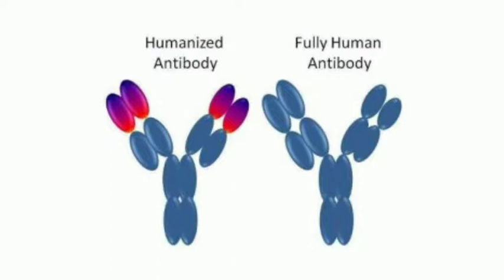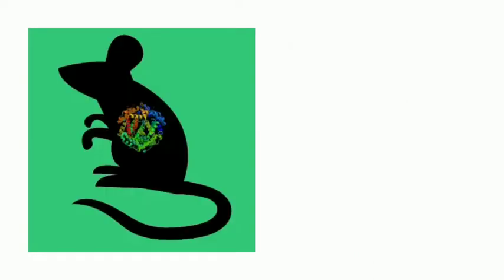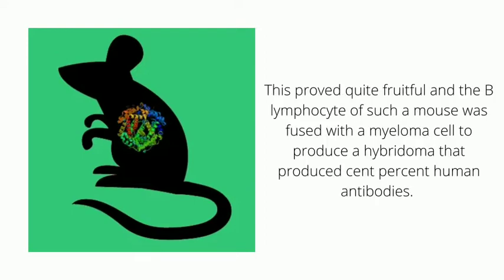Even better are the 100 percent humanized antibodies, which are completely safe for use as an immunotherapeutic agent. An approach involving the fusion of a human B cell with a myeloma cell was attempted but without much success. The next approach was to create a recombinant mouse wherein its immunoglobulin genes are replaced by their human counterparts. The B lymphocyte of such a mouse was then fused with a myeloma cell to produce a hybridoma that generated 100 percent human antibodies.